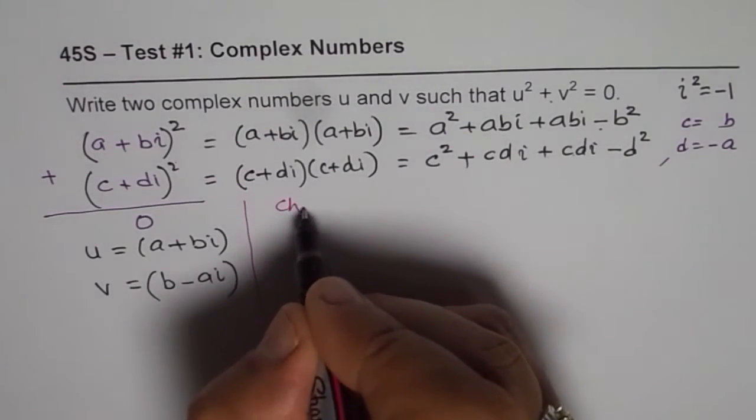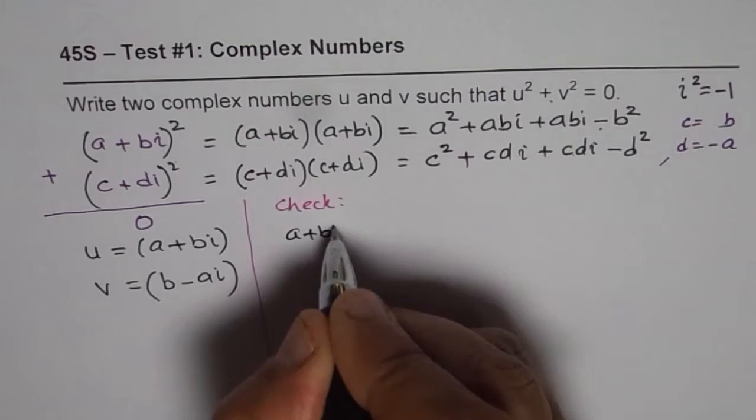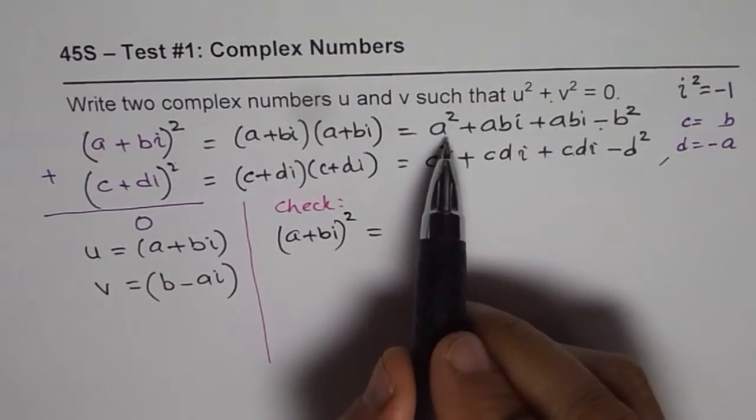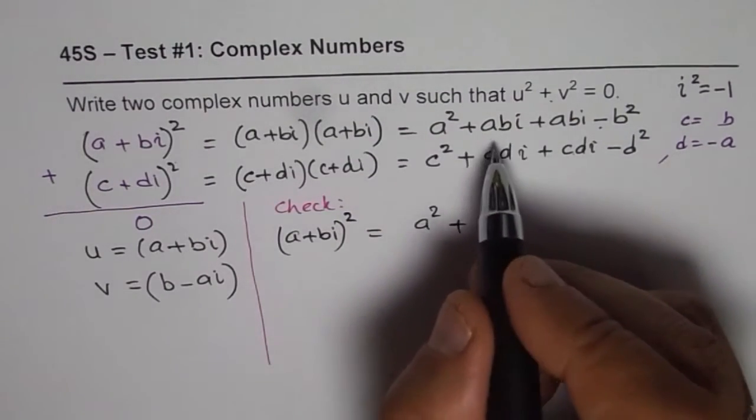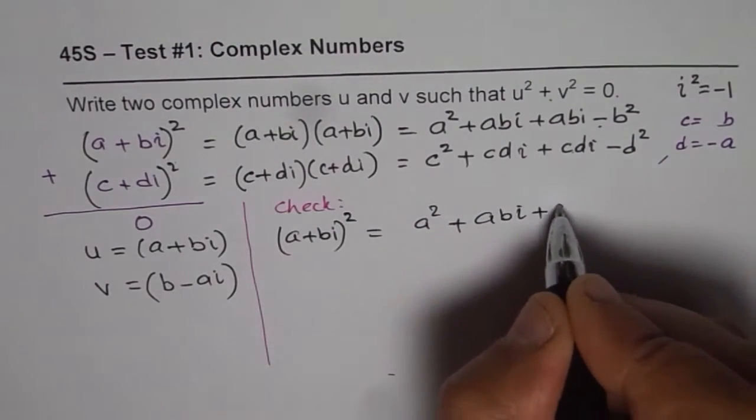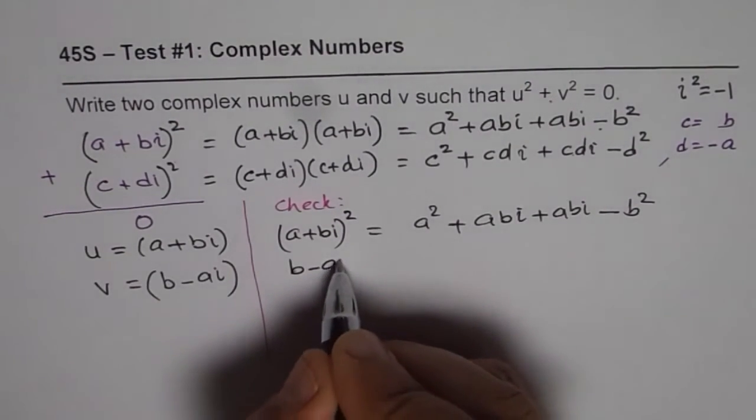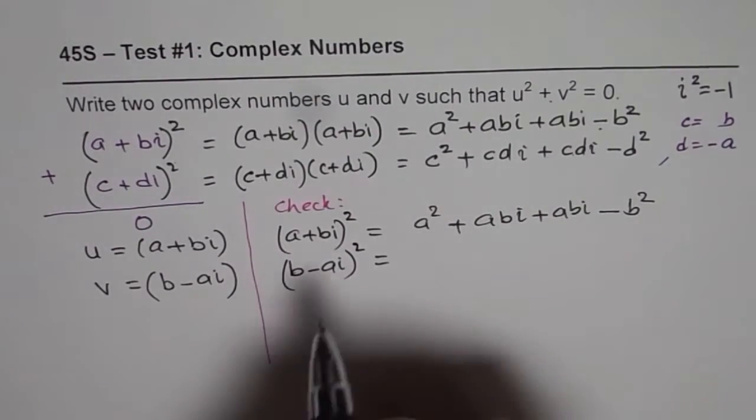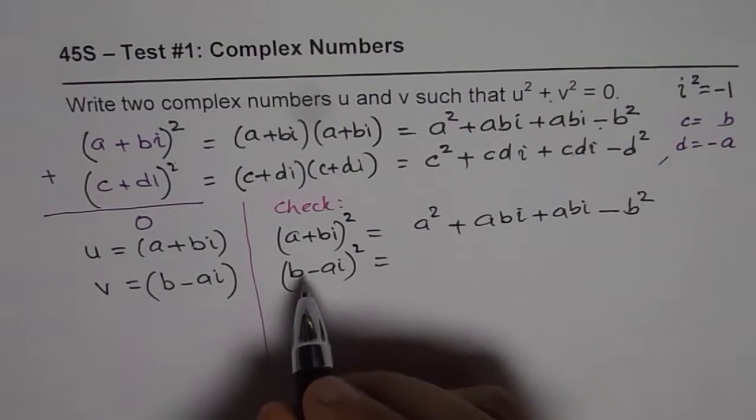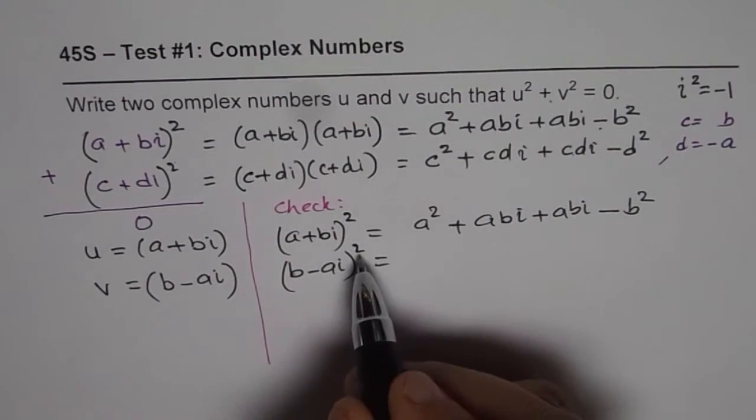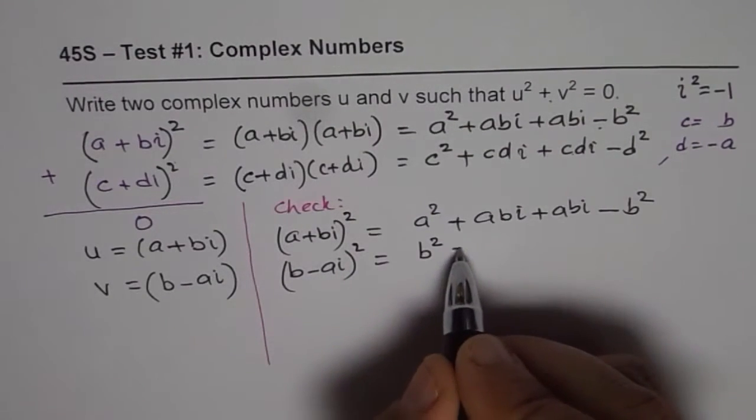Now, what we will do is, we will just check whether it works or not. So, let us do. (a + bi)² is already known to us, which is a² + abi. We will write a² plus, I am not combining them on purpose. I could write 2abi, but let it be like this. Plus abi - b². Now, what is (b - ai)²? So, there will be b times ai. We will have to multiply this 2 times. So, there will be, you can use the quadratic formula also. So, b², which is the first term, -2 times both, which is -2abi, plus ai².